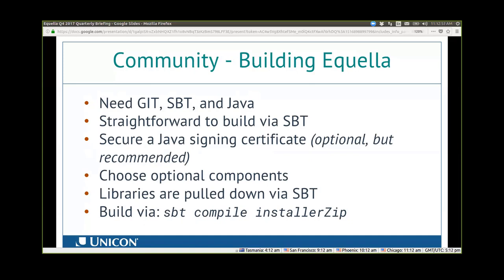It's fairly simple to include the optional components, and there are directions on the Aquela GitHub site on how to bring those in. SBT handles all of your dependencies — like any modern build tool, it pulls down the libraries from the Maven repos, so you don't have to worry about whether you're using the latest libraries just to build Aquela. To build, you invoke SBT, say compile, and then create your installer zip. What comes out is the zip file that you unzip and then run the enterprise installer jar.